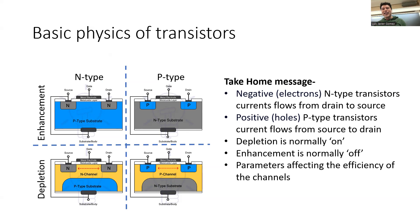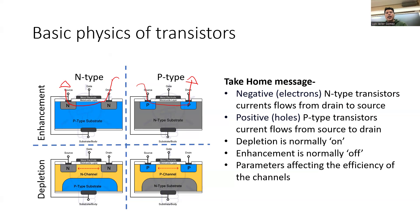So current flows from the drain to the source — basically, if you look at the device, the current is going to flow this way. For a p-type, the current flows from the source to the drain. And then there are an additional two types. If you look at the symbols, there is what we call the enhancement and depletion mode. The depletion mode is normally on; the enhancement mode is normally off.